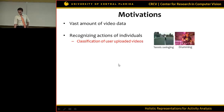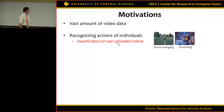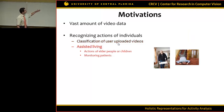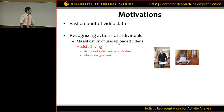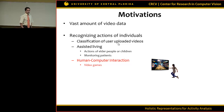Action recognition has different applications such as the classification of user-uploaded videos. We would like to automatically label videos as tennis, swinging, and drumming, for example. There is also the assisted living application, where we would like to recognize the actions of other people or children and also monitor patients. And there are Xbox and video consoles that need human-computer interaction in video games.